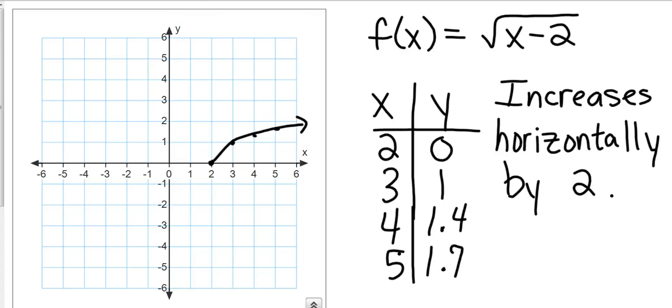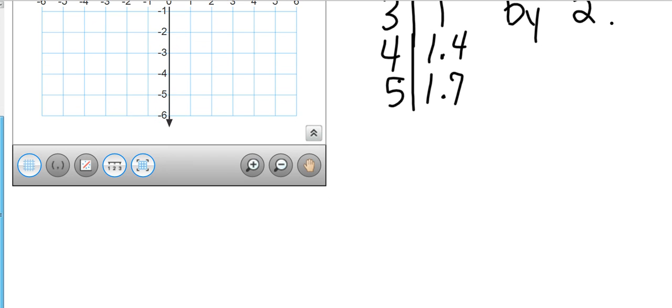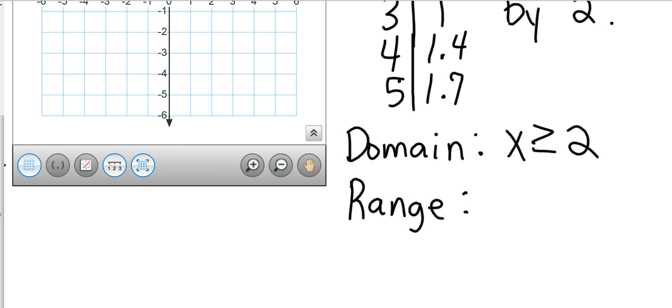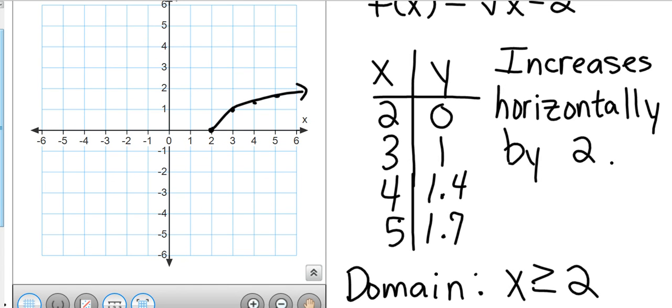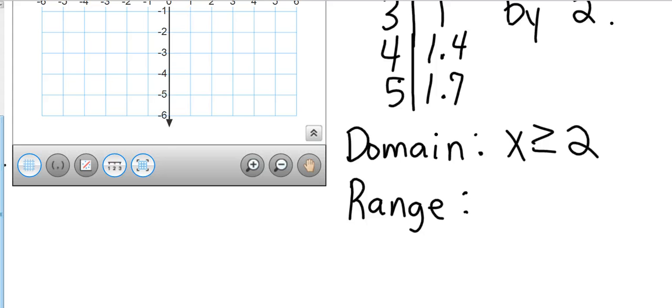Okay. We know that domain is our x values. So, looking at our x values, we started at 2 because anything less than 2 is going to give us a negative value, which will not work. And so, our domain is our x had to be greater than or equal to 2. And then, our range is our y values. And so, we go back up here and we look at our y values. With our least domain, our least y value is 0. And so, our domain is greater than or equal to 2. And our range is greater than or equal to 0.